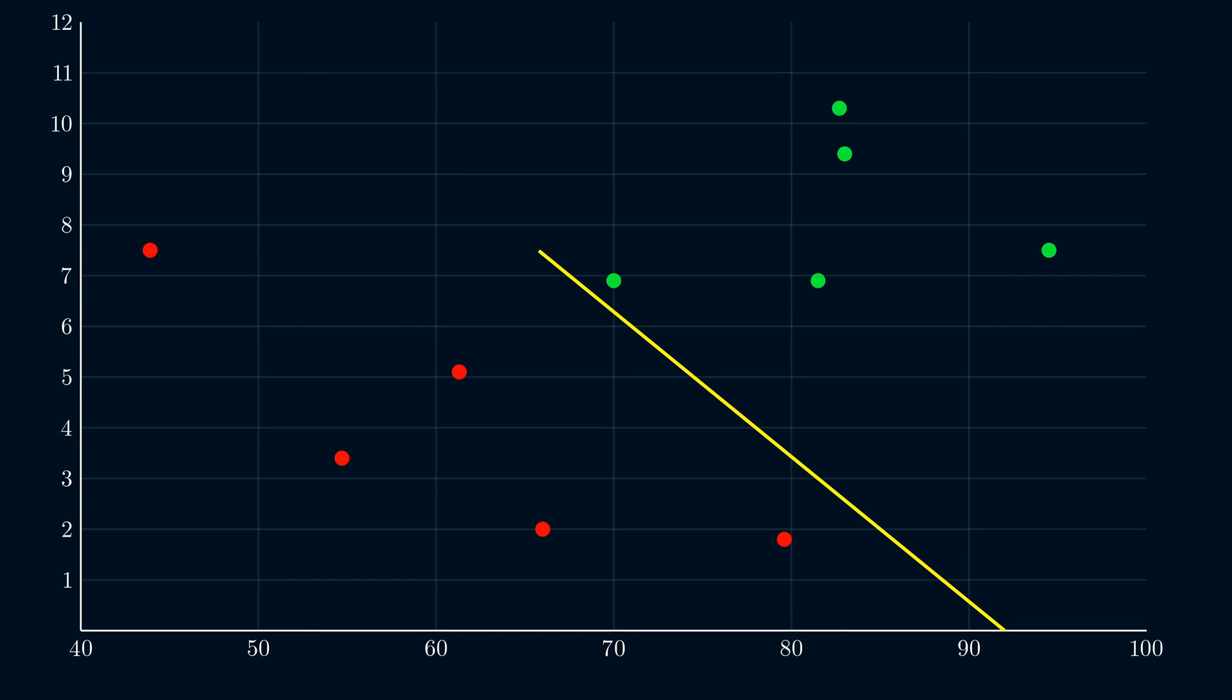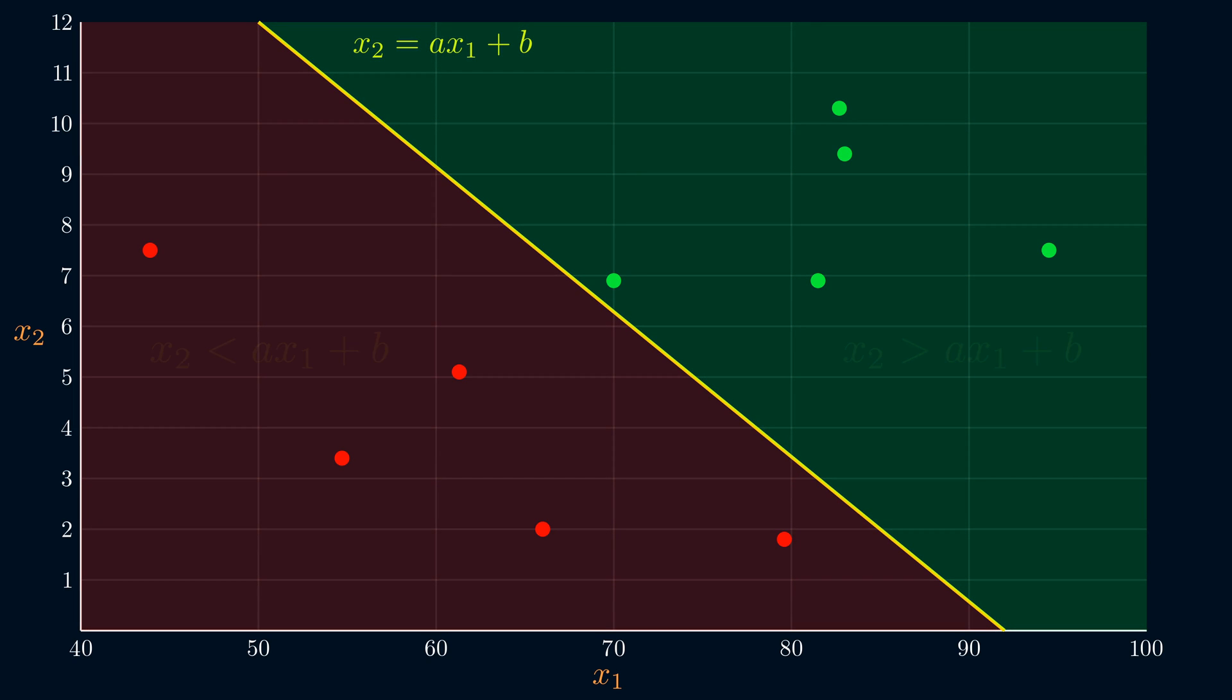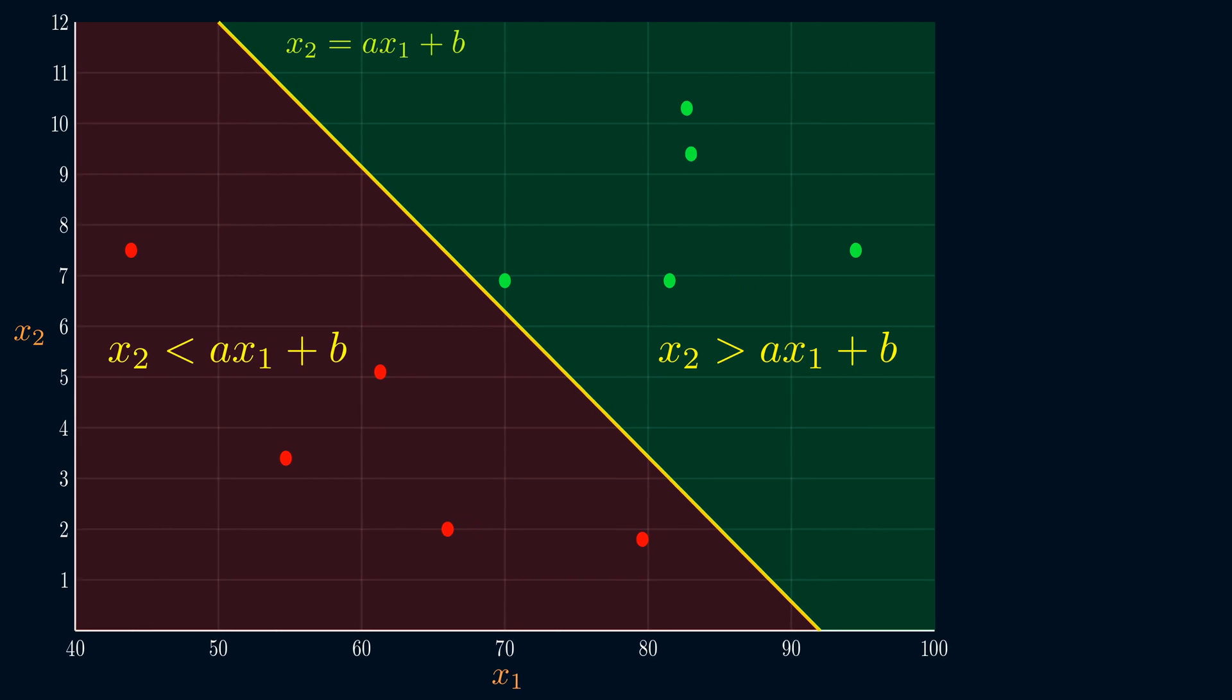If we take the generic equation of a line, x2 equals ax1 plus b, the two half spaces of forms corresponds to these inequalities. We want the green points to satisfy one inequality, and the red points to satisfy the other inequality. Then the line will separate the two classes.